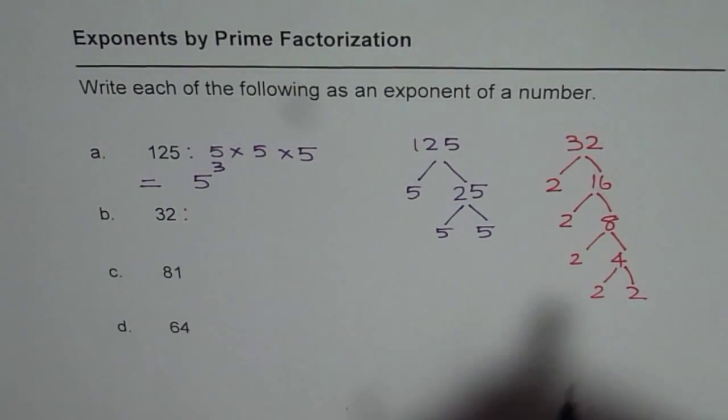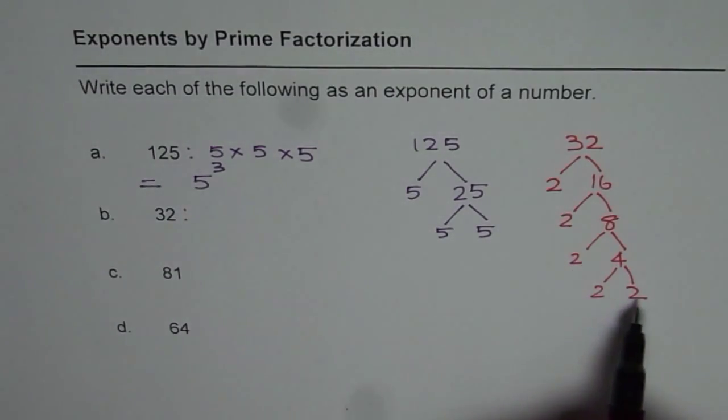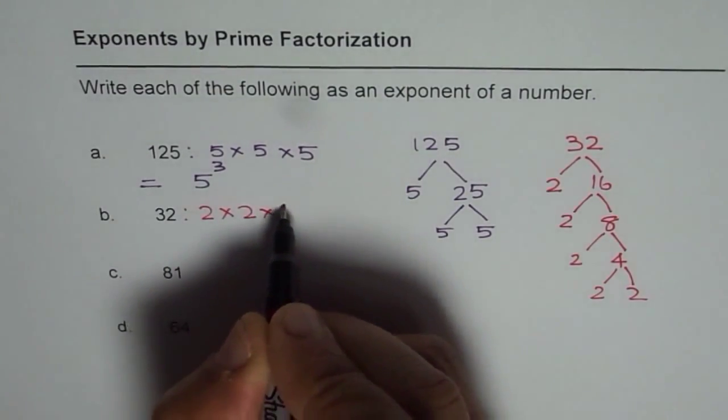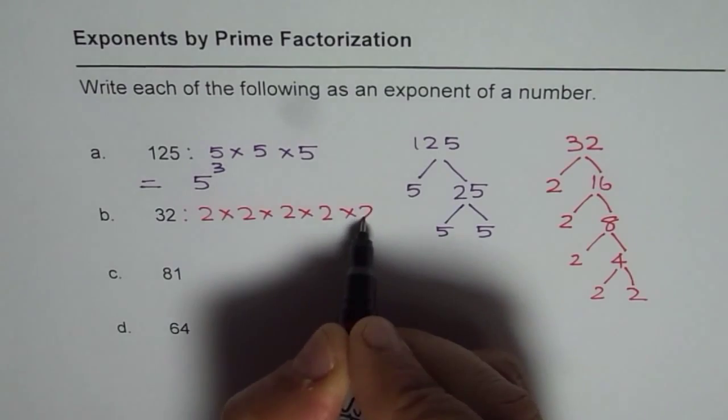So we can write 32 as 1, 2, 3, 4, 5, five twos, right? Product of these 5 twos, correct? So what do we get here?